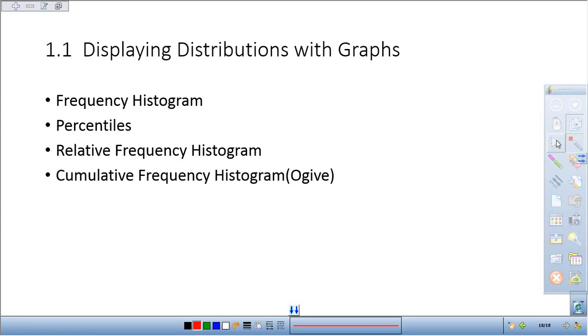Last time we talked about describing distributions and comparing distributions, everything from the center, the shape, the spread, and the outliers. Today we're going to be looking at physically how to create different types of distributions. We already looked at the stem plot and the dot plot.